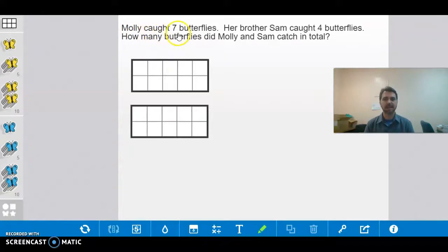Molly caught seven butterflies. Her brother, Sam. So remember, we're visualizing, right? Picturing what's happening. Molly caught seven butterflies, similar to yesterday. Excuse me, when I think it was Dan, Danny, who caught butterflies. Her brother, Sam, caught four butterflies. How many butterflies did Molly and Sam catch in total?